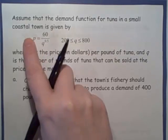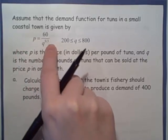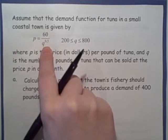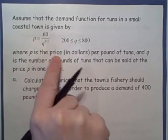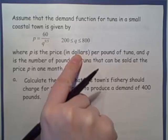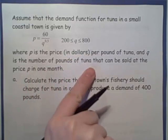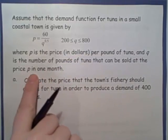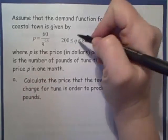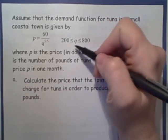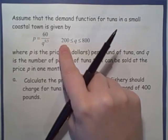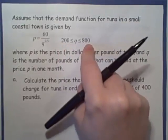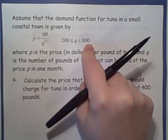Usually we see Q equals in terms of P, but this one is P in terms of Q. But it's the same idea. Here, P is the price in dollars per pound of tuna, and Q is the number of pounds of tuna that can be sold at price P in one month. The fact that we have Q is between 200 and 800 tells us that they're going to sell at least 200, but less than or equal to 800 pounds of tuna in a month.